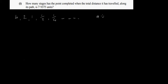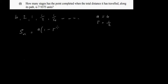We can see that a, our first term, is 4, and what we're doing is multiplying each term by half. So our r is half. We want to move a total distance of 7.9375 units, so we need to add these up — we're going to use the formula for the sum to n terms of a geometric sequence: S_n = a(1 − r^n) / (1 − r). We want our sum to n terms to equal 7.9375.